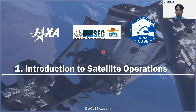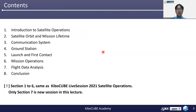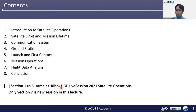Here is the outline of this lecture. Firstly, I'll introduce satellite operations. I'll explain the outline of satellite orbits and mission lifetime. Then I'll talk about fundamental items for satellite operations: the communication ground station, launch and first contact, and the mission operations. This lecture is an updated version of KiboCube Live Session 2021 Satellite Operations. If you have watched the previous lecture, please watch only Section 7, Flight Data Analysis.